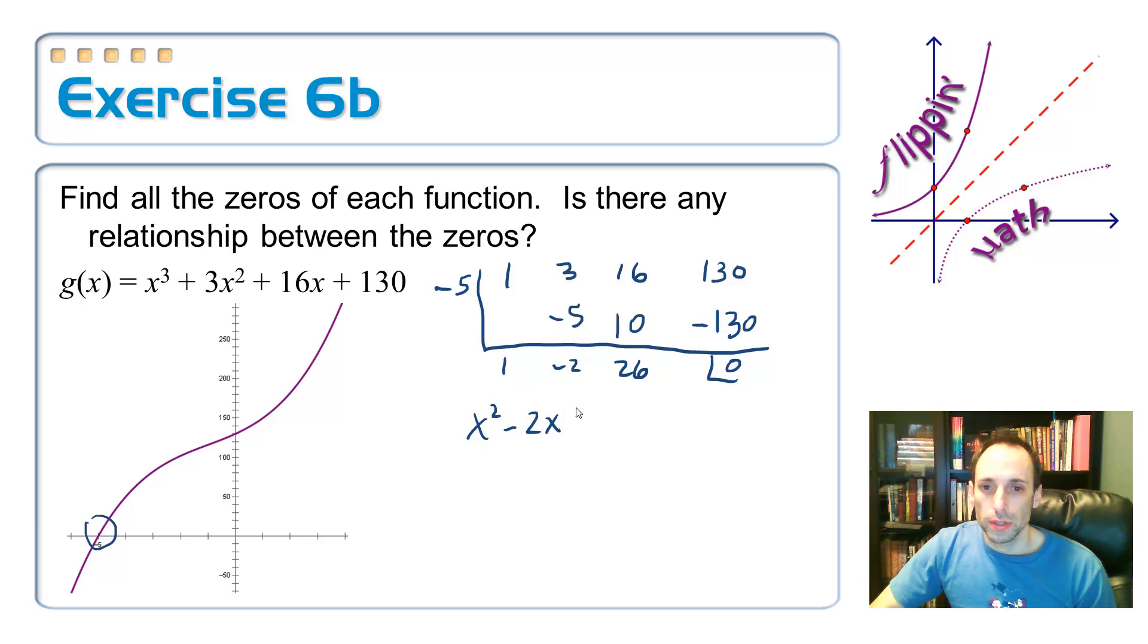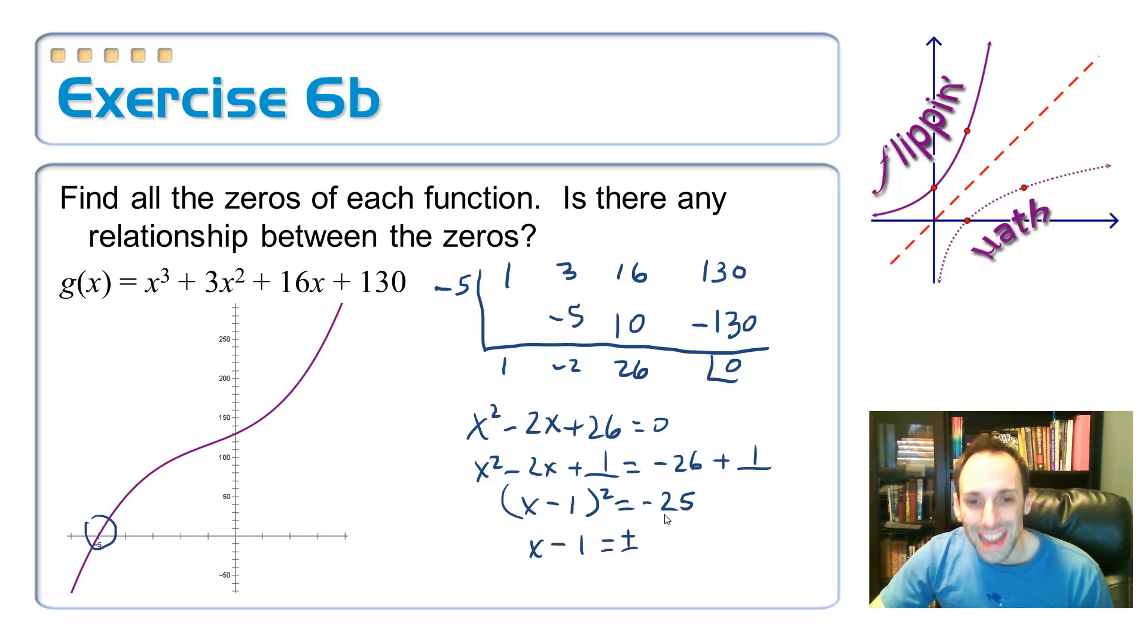So what I have left over here, x squared minus 2x plus 26. You want to complete the square again? Okay. Let's do it. So subtract the 26 over. x squared minus 2x plus something equals negative 26 plus something. Divide by 2 squared. It's 1. Add 1. x minus 1 squared is equal to negative 25. Maybe you see where this is going. When I take the square root, x minus 1 is equal to plus or minus. Since it's negative, it's got to be imaginary. 5i. Add the 1 over. x is equal to 1 plus or minus 5i.